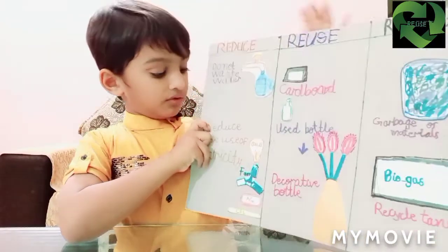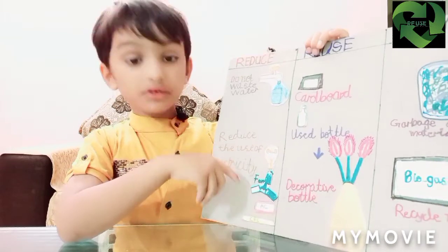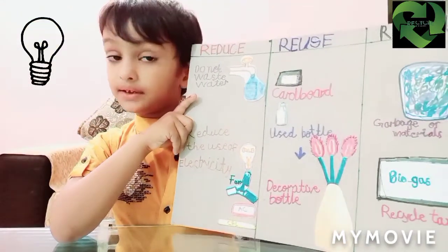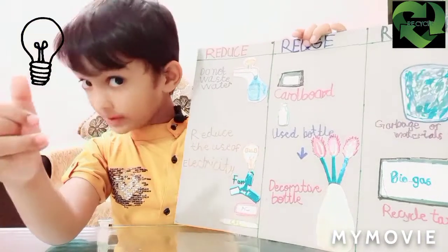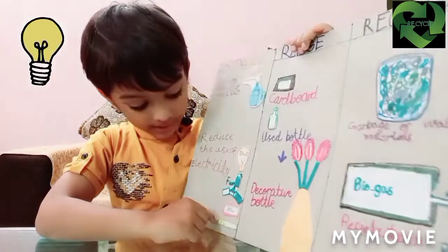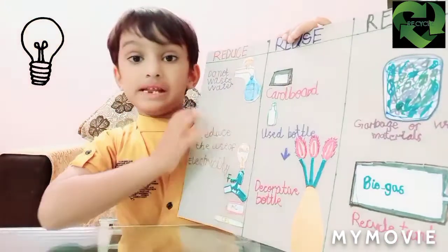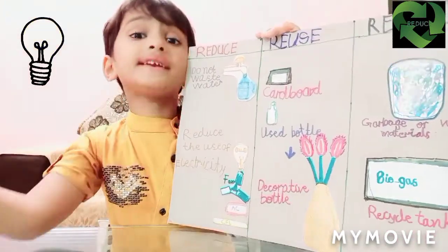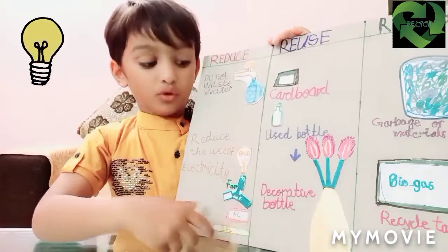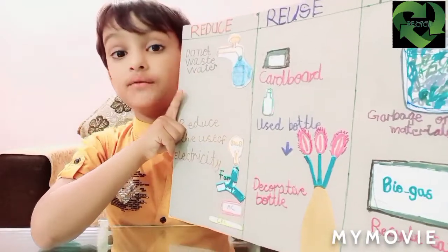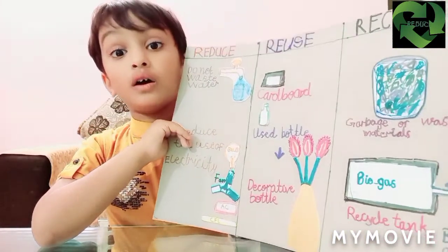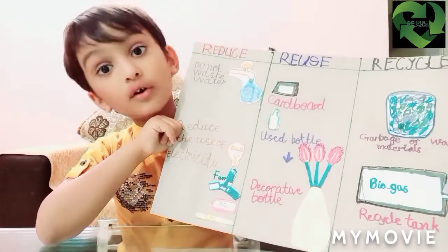Next is reduce the use of electricity. If we are using electricity — bulb, fan, AC and CFL — any electricity items, when we are not using them, we should turn them off. For example, if we are not in the room, all the lights or any electrical things should be switched off.